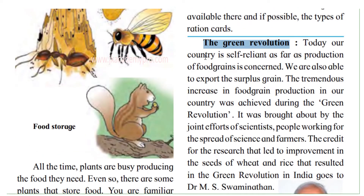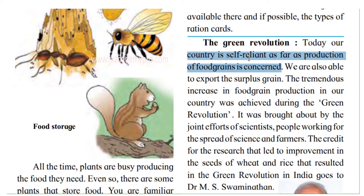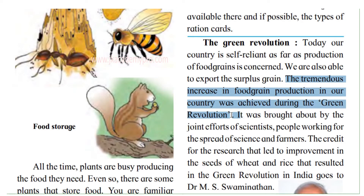Today our country is self-reliant as far as production of food grains is concerned. Self-reliant means we are able to sustain ourselves — we have enough food grains. Earlier it was not so; we had to import, that is, get grains from other countries. But now India has so much food grains that there is extra, and we are also able to export the surplus. Export means sell it to other countries for a lot of money.